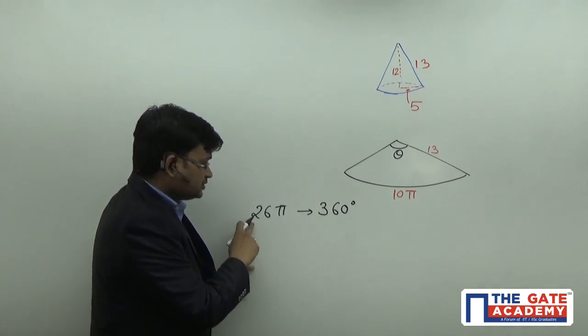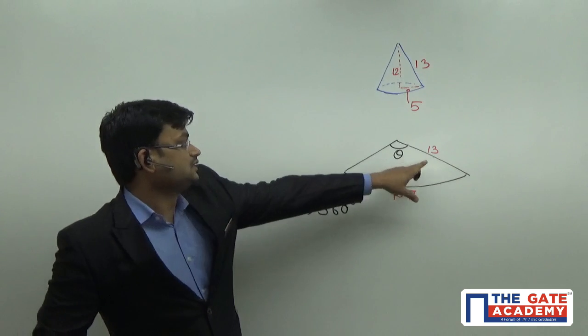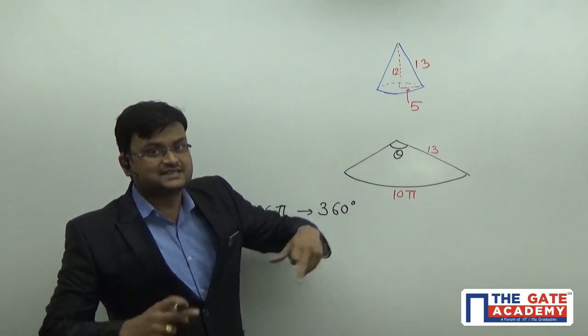I am sure you must be knowing how I came with this 26π. This is 13 into 2 into π, because 2πr is the circumference.